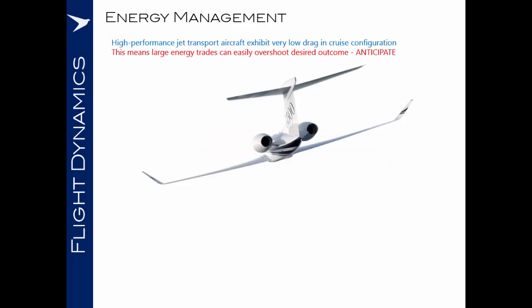In modern high performance jet transport airplanes, great pains have been taken by the designers to minimize the drag in the cruise configuration. Therefore, large energy trades, trading that speed for height or height for speed, can easily overshoot the desired outcome. And as airplanes are heavier, there is a certain amount of anticipation which is required due to the inertia of the airplane, the tendency for it to continue in its existing condition.